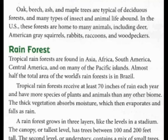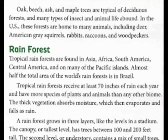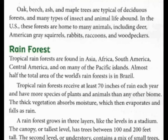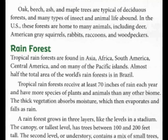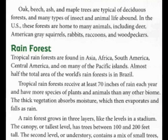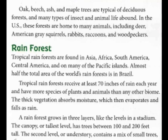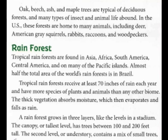Rainforest: Tropical rainforests are found in Asia, Africa, South America, Central America, and on many of the Pacific Islands. Almost half the total area of the world's rainforest is in Brazil. Tropical rainforests receive at least 70 inches of rain each year and have more species of plants and animals than any other biome. The thick vegetation absorbs moisture, which then evaporates and falls as rain.